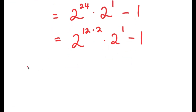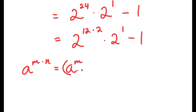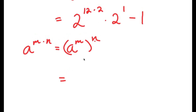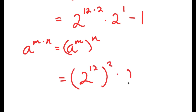Another property of exponents is that a to the power of m times n is equal to a to the power of m, to the power of n. So 2 to the power of 12 times 2 is going to equal 2 to the power of 12, to the power of 2, and I have this times 2 minus 1.